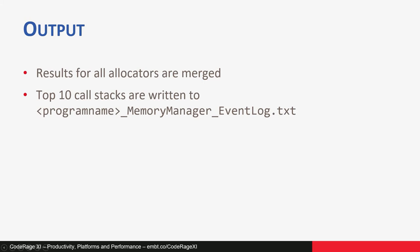At the end, data for all 58 collectors is merged. There are 58 allocators, so we need 58 collectors. The top 10 call stacks are written to a text file — the same file used in full debug mode.